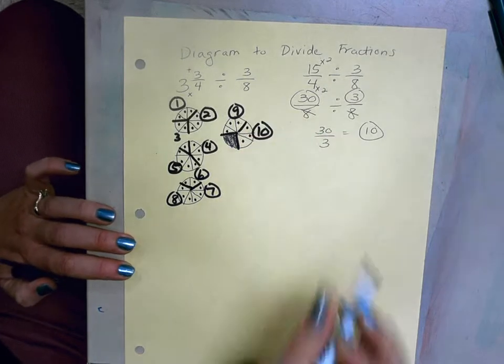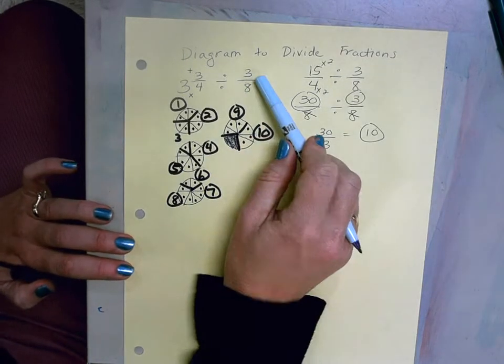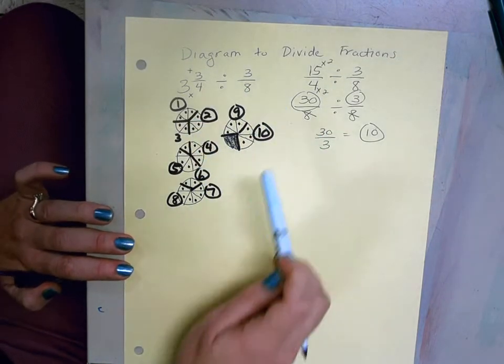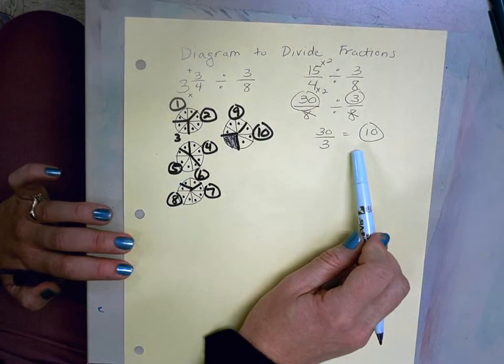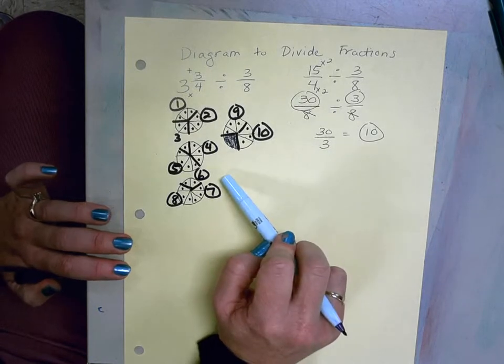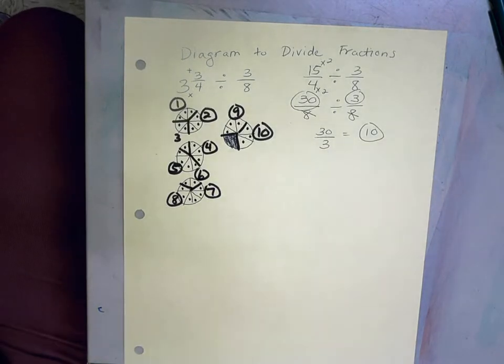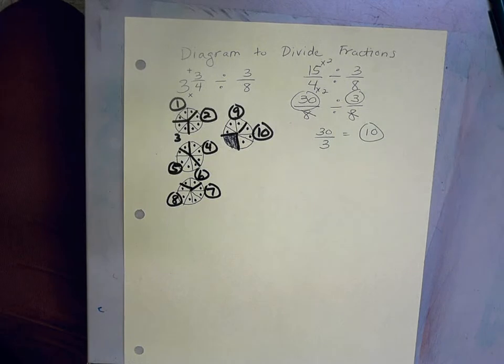Ten groups of 3/8 by taking that 3 and 3/4 and dividing it. It works if we do the common denominator method. And there's our picture to help demonstrate it. Hope this helps a little bit. Talk to you next time.